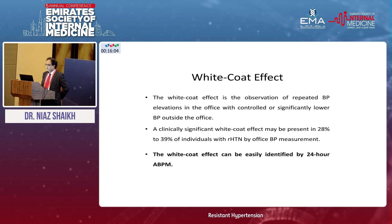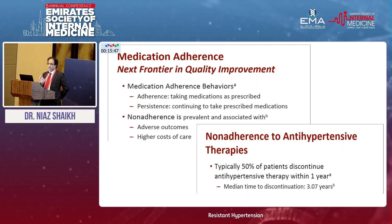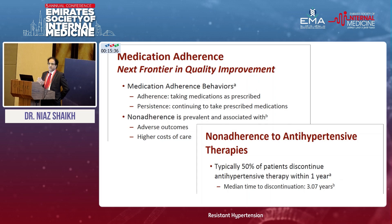I will spend a few more minutes on adherence, because this is a very common problem with our patients. Adherence is basically the ability to take medications as prescribed by the doctor. Persistence means the ability to take medicines regularly for a longer period of time. Around 50% of patients generally discontinue antihypertensive medications within one year.